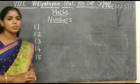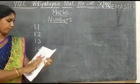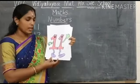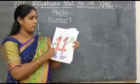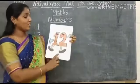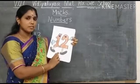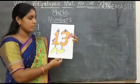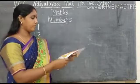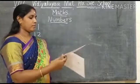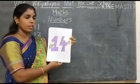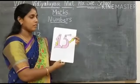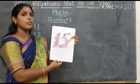Ok children, let's show the flash cards. What number is this? This is number 11. What number is this? This is number 12. What number is this? This is number 13. What number is this? This is number 14. What number is this? This is number 15.